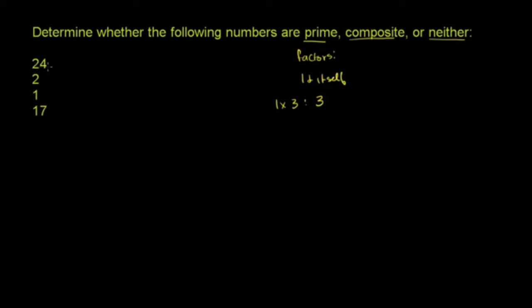So first let's think about 24. Let's think about all of the natural counting numbers that we can divide into 24 without having any remainder—we'd consider those the factors. Well, clearly it is divisible by 1 and 24.